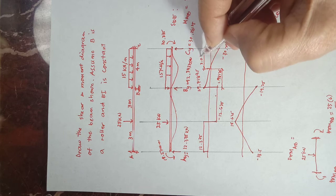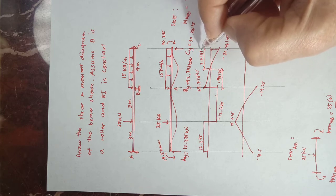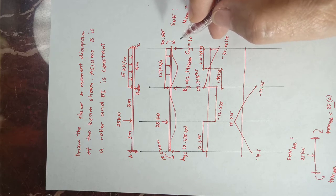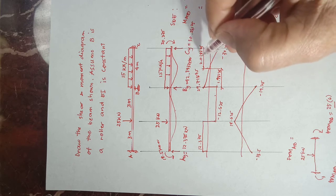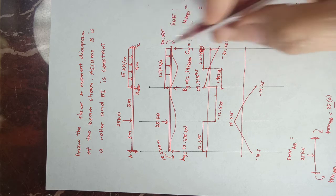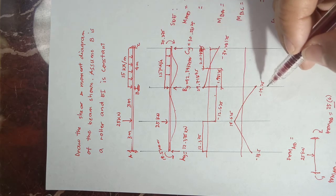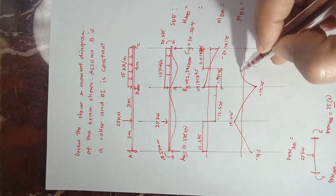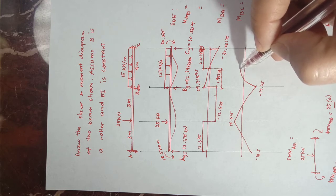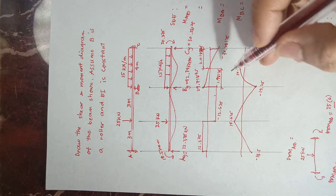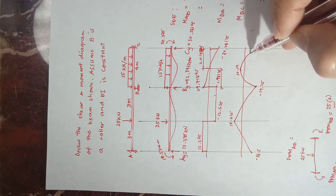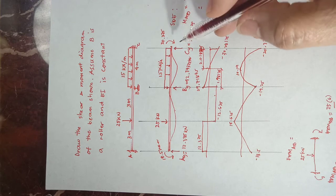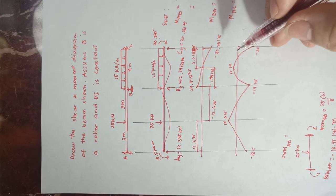Continuing the moment diagram on span BC: starting at negative 19.25, adding the area of the triangle gives a positive value of approximately 10.19, then subtracting the remaining area gives negative 20.375. At support C the moment is 20.375 kilo-newton meters, which closes the moment diagram.